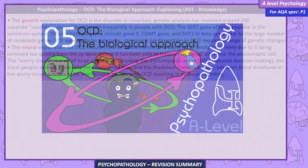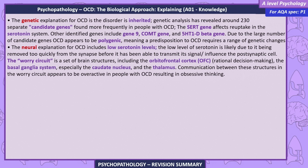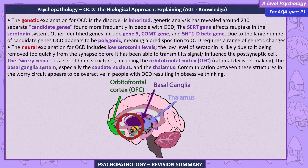OCD — the biological approach. Explaining: the genetic explanation for OCD is that the disorder is inherited. Genetic analysis has revealed around 230 separate candidate genes found more frequently in people with OCD. The SERT gene affects reuptake in the serotonin system; other identified genes include COMT gene and 5-HT1D-beta gene. Due to the large number of candidate genes, OCD appears to be polygenic, meaning a predisposition to OCD requires a range of genetic changes. The neural explanation includes low serotonin levels, likely due to serotonin being removed too quickly from the synapse before it can transmit its signal to the post-synaptic cell. The worry circuit — including the orbital frontal cortex, the basal ganglia system (especially the caudate nucleus), and the thalamus — appears to be overactive in people with OCD, resulting in obsessive thinking.